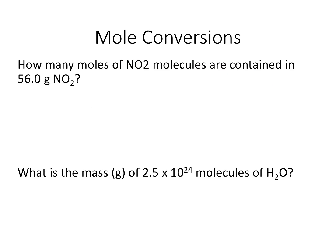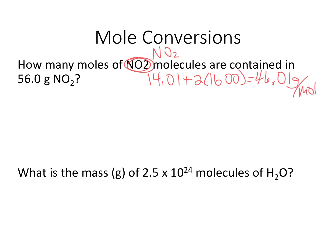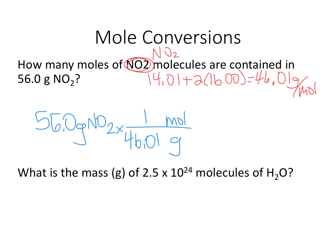How many moles of NO2 molecules are contained in 56 grams of NO2? First I want to find the molar mass of NO2: one nitrogen is 14.01, and two oxygens are 16.00, so adding that together gives 46.01 grams per mole. Now using dimensional analysis: 56.0 grams of NO2, with one mole equal to 46.01 grams, gives 56 divided by 46.01, which equals 1.22 moles of NO2.